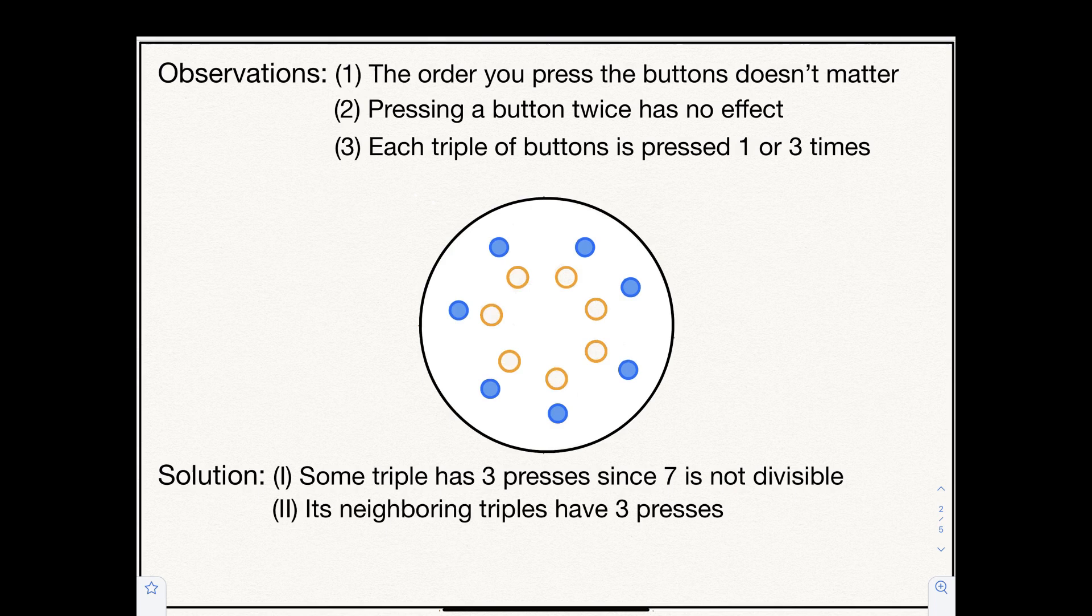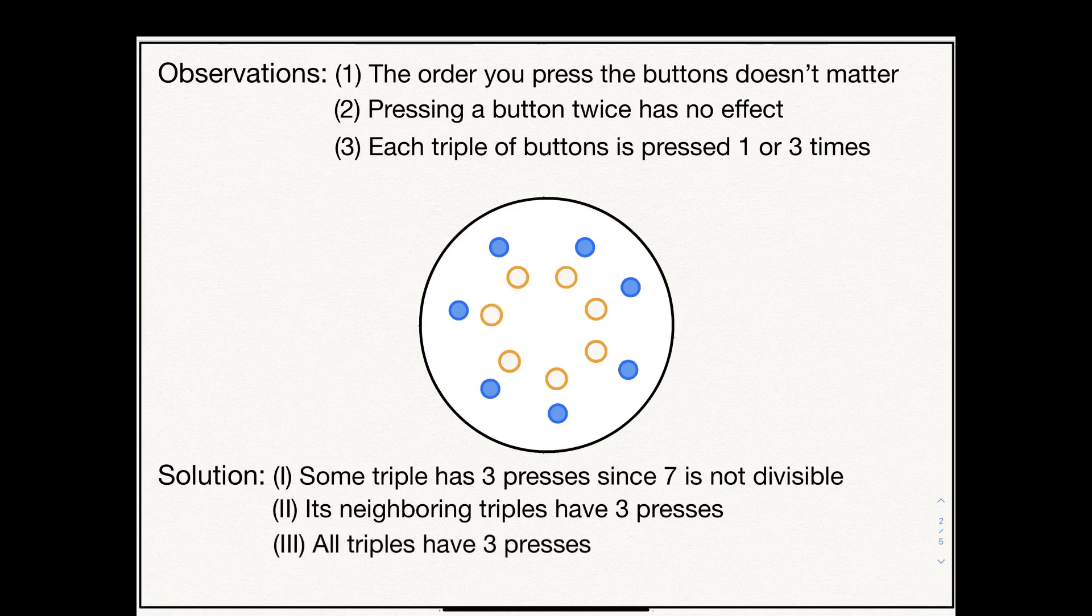But now its neighboring triples already have two presses, and so we need to complete them with a third press to turn on the central light. Continuing in this way, all triples need to have three presses.